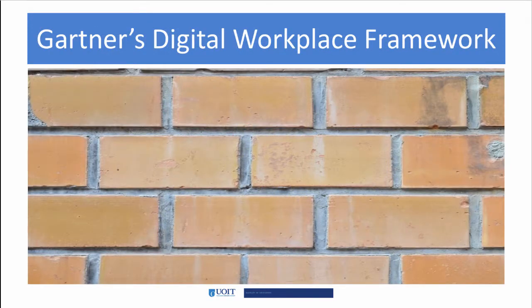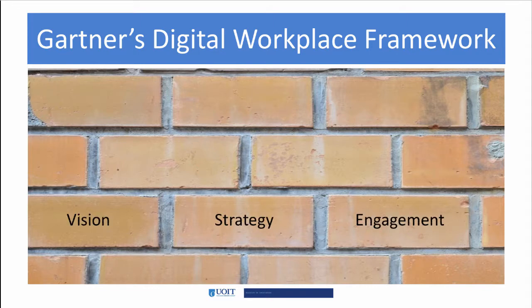Gartner's framework focuses on five areas: change management, technology, strategy, and people or the culture of the organization. Vision, strategy, and engagement are the first three building blocks. Vision means to know the why, what, and how of digital technologies in the workplace. Strategy is the roadmap or blueprint each department must take to ensure the vision is successful.